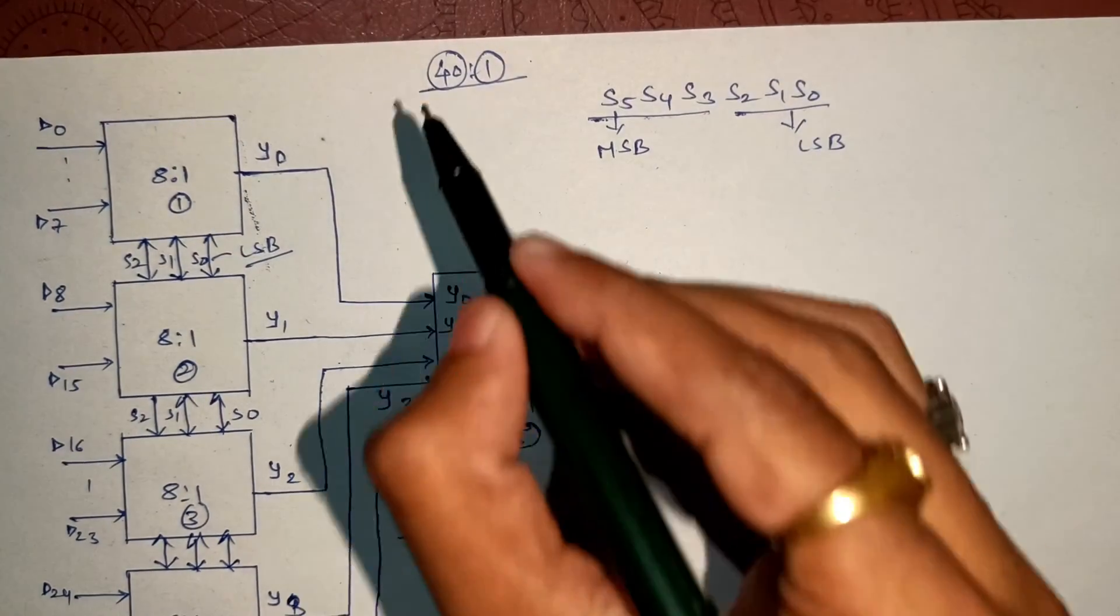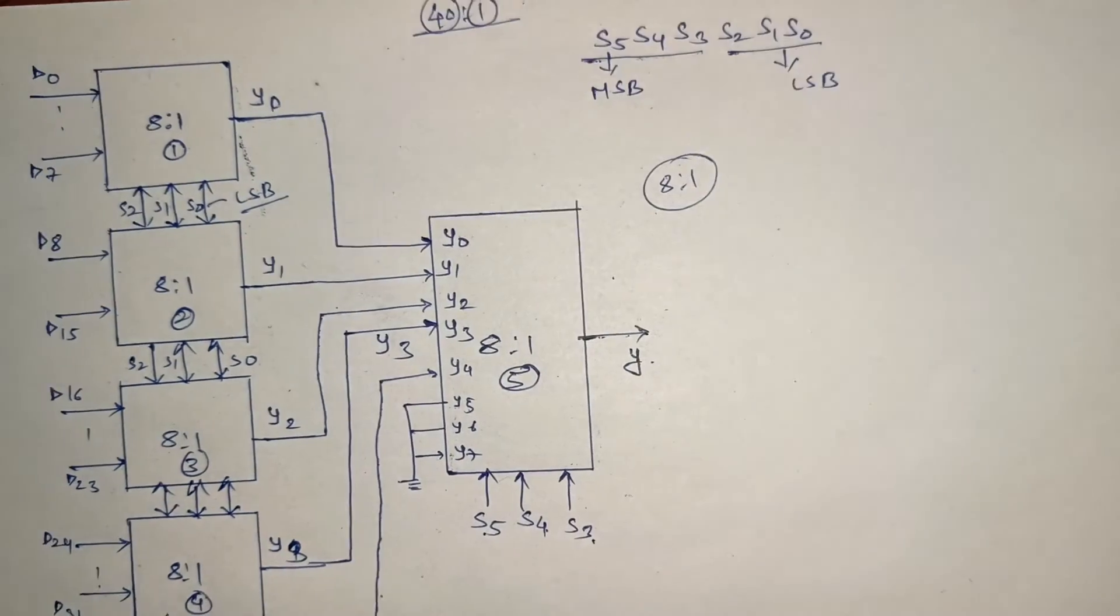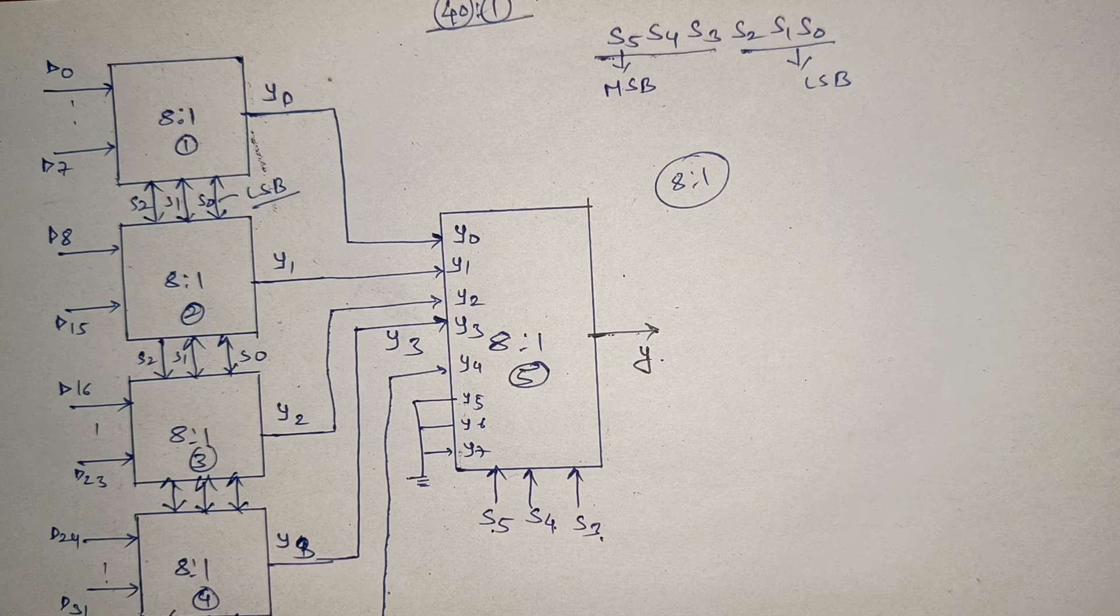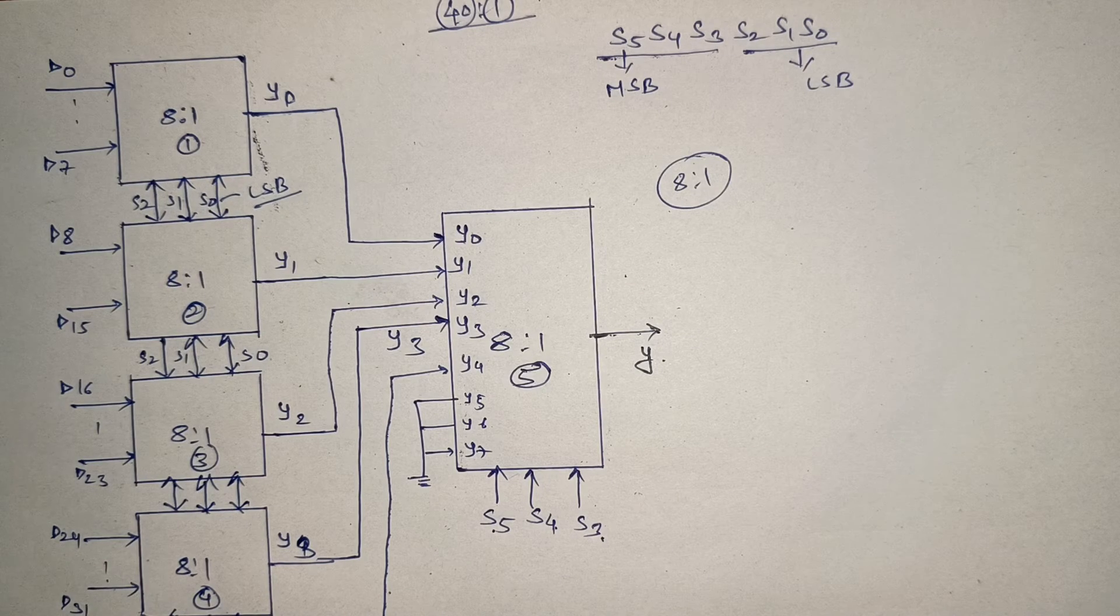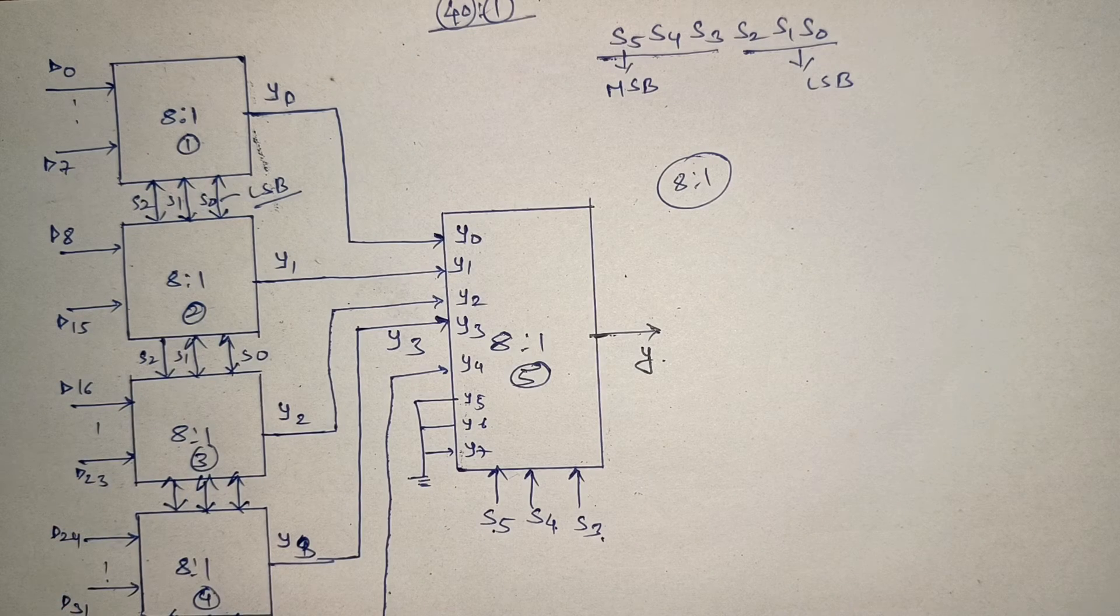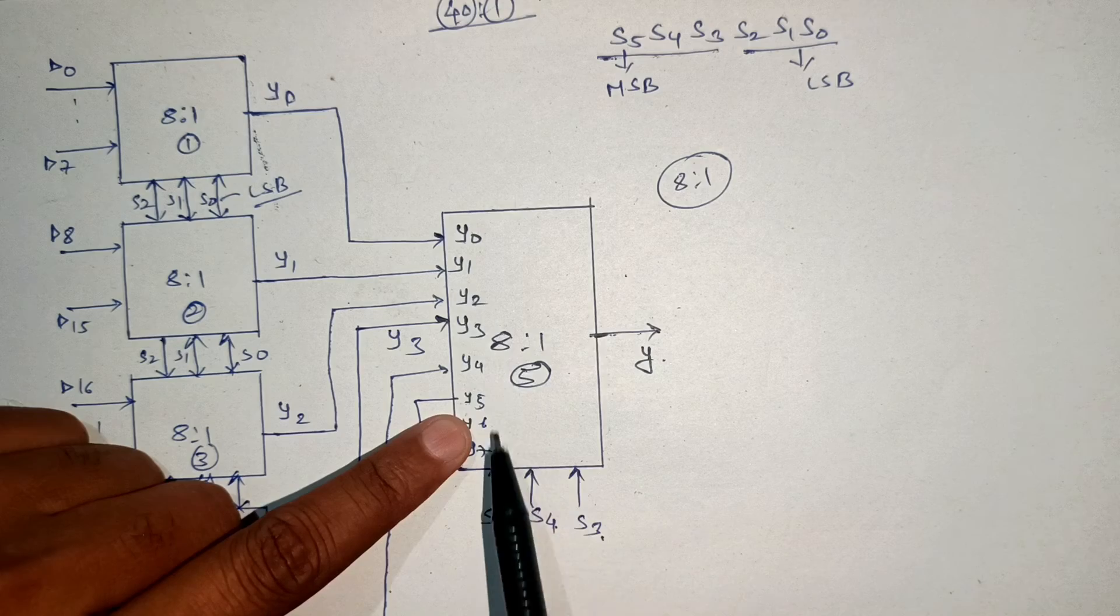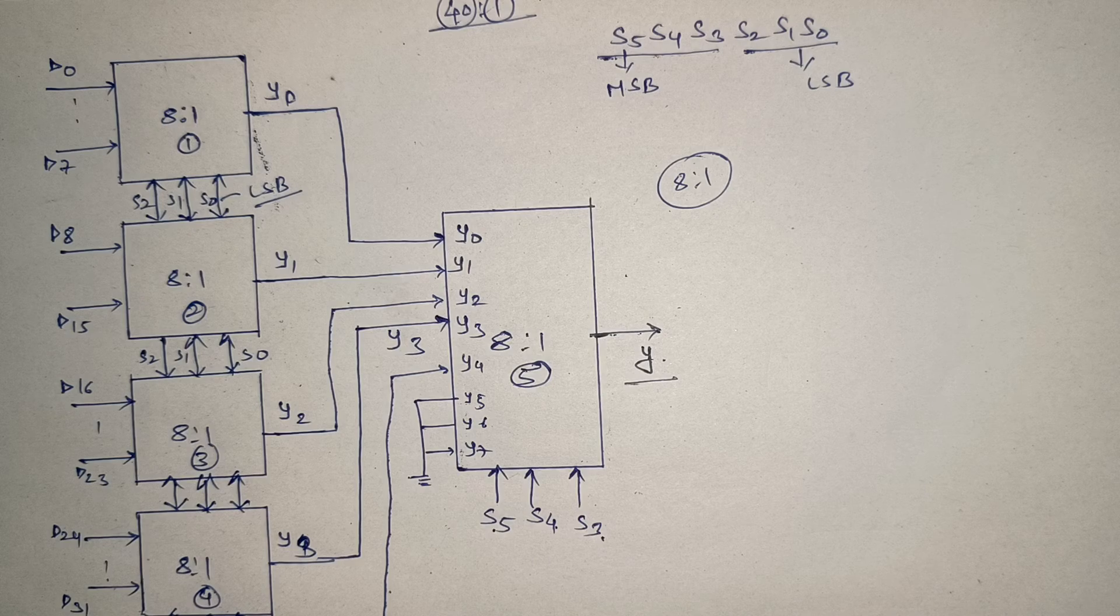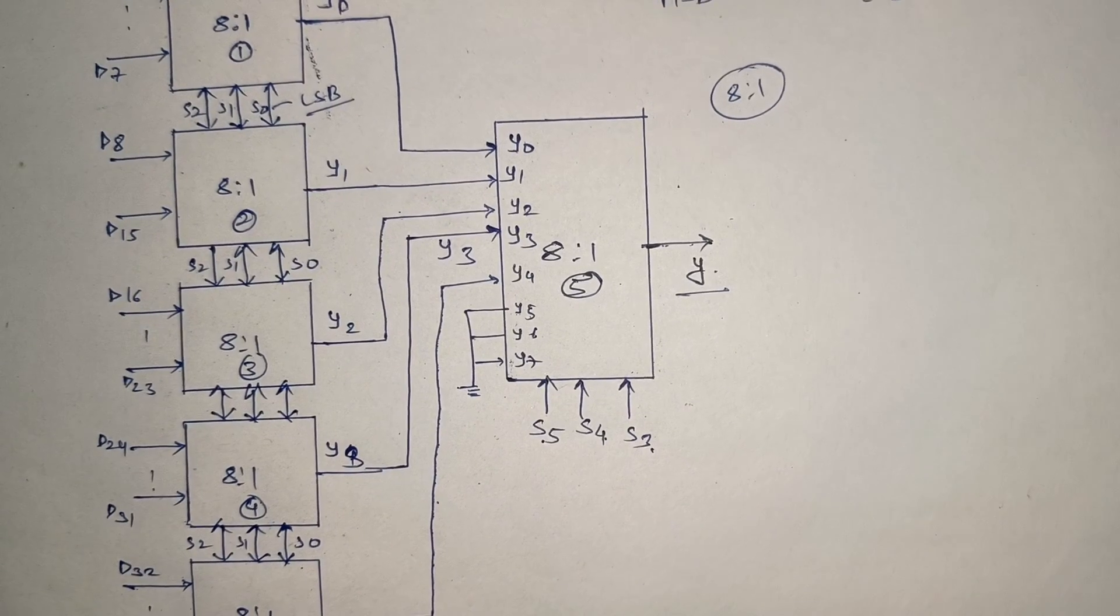So in this way we have designed 40 to 1 mux using 8 by 1 mux. This is how one can draw the schematic for any multiplexer. If you have any exam type question, first check how many muxes are required. Second, how many select lines are there. Accordingly draw the structure, connect inputs, check the output terms, and have the last mux take those as inputs. Finally we will get a single output. This is how the multiplexer trees can be drawn. I hope you understood this. Thank you.